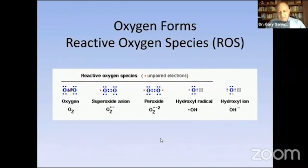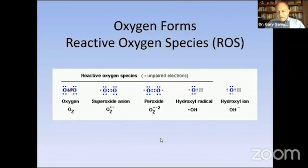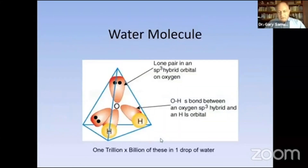When oxygen grabs an electron, it becomes a new thing. Oxygen, when it grabs an extra electron, becomes a superoxide ion. It grabs another one, it becomes a peroxide ion, like hydrogen peroxide. And then it grabs more, becoming more and more active and more reduced. The most reduced form of oxygen is water, and oxygen is a major component in water.